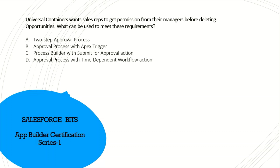For the next question about requiring approval before deleting a record, a two-step approval process alone is not sufficient. An approval process with an Apex trigger is possible — Apex triggers let you do almost anything. A process builder submit approval option is approval-related only, and time-dependent workflow cannot handle deletion. So the correct answer is an approval process with an Apex trigger.